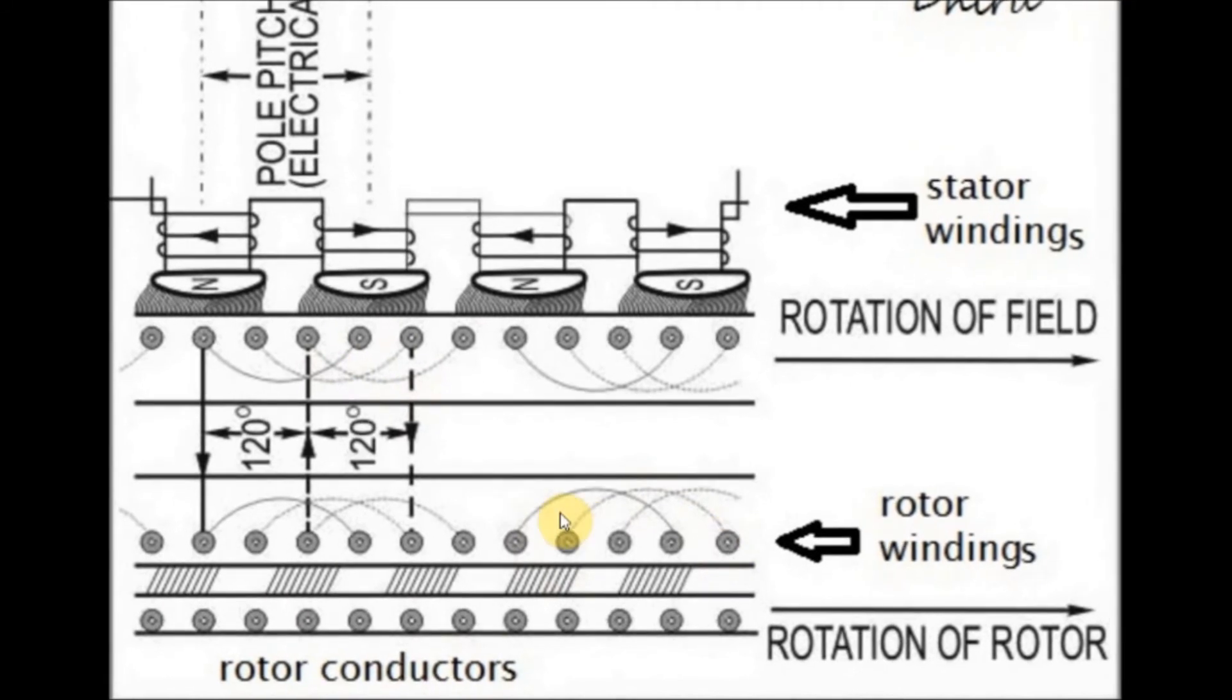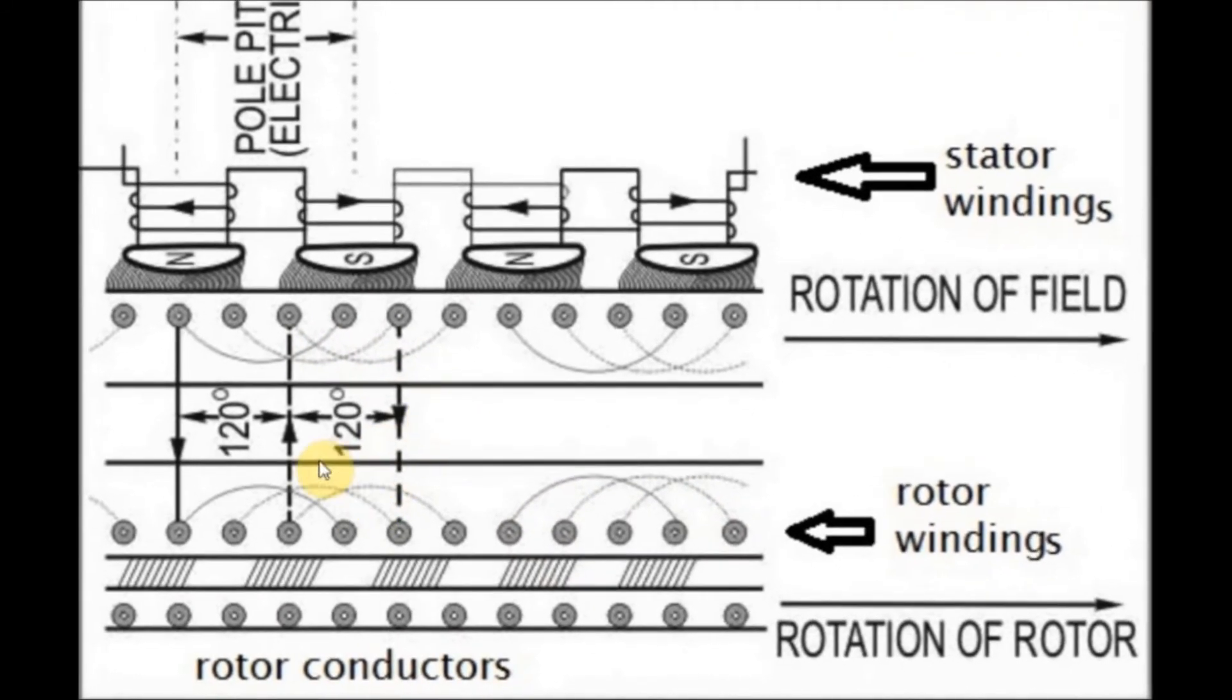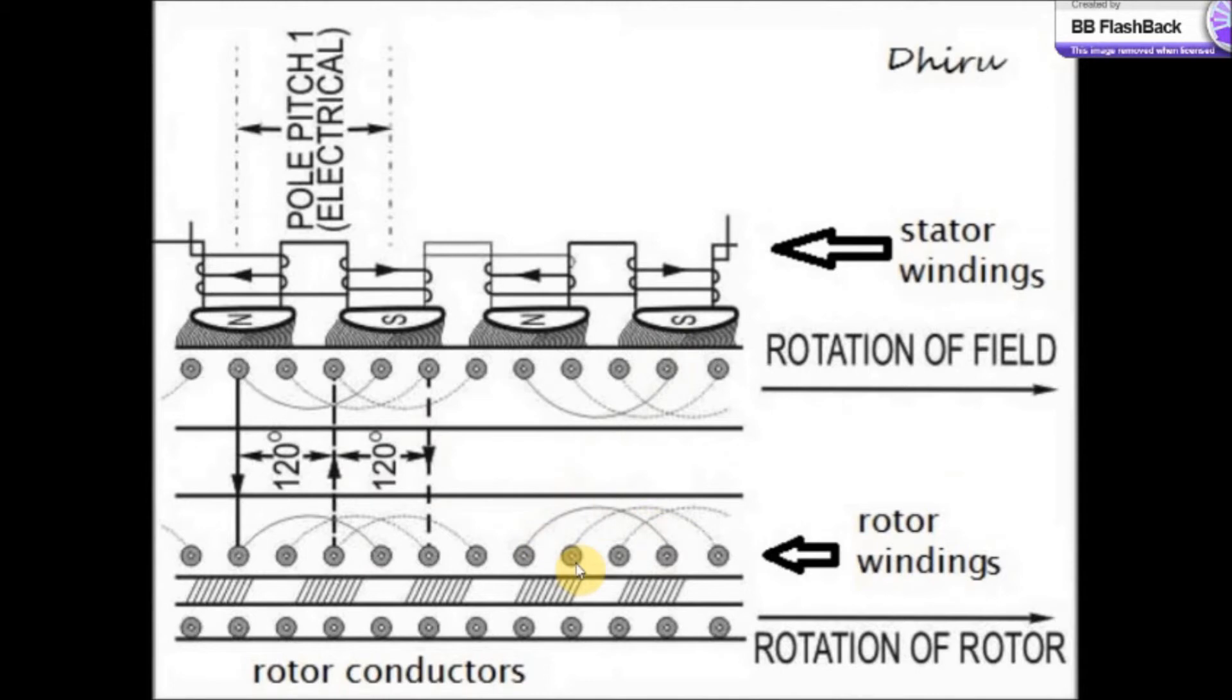These fields cut the rotor winding and cause changes in magnetic field in rotor conductor. As we know, whenever there is a change in magnetic field across conductor, an EMF is produced.